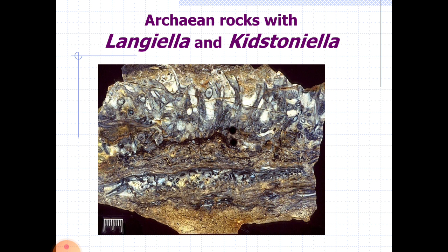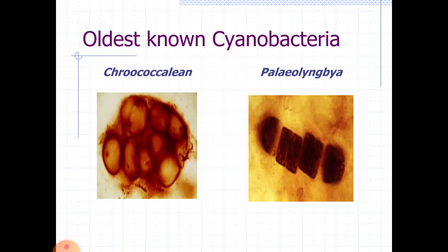This is an Archean rock with Eoentophysalis and Kinstonella. In the picture we can see gray-colored circular and wavy patches. These patches are the cyanobacteria. The other bacteria are Crocochilins, which form in clusters, whereas Paleolingbae is a filamentous cyanobacteria.